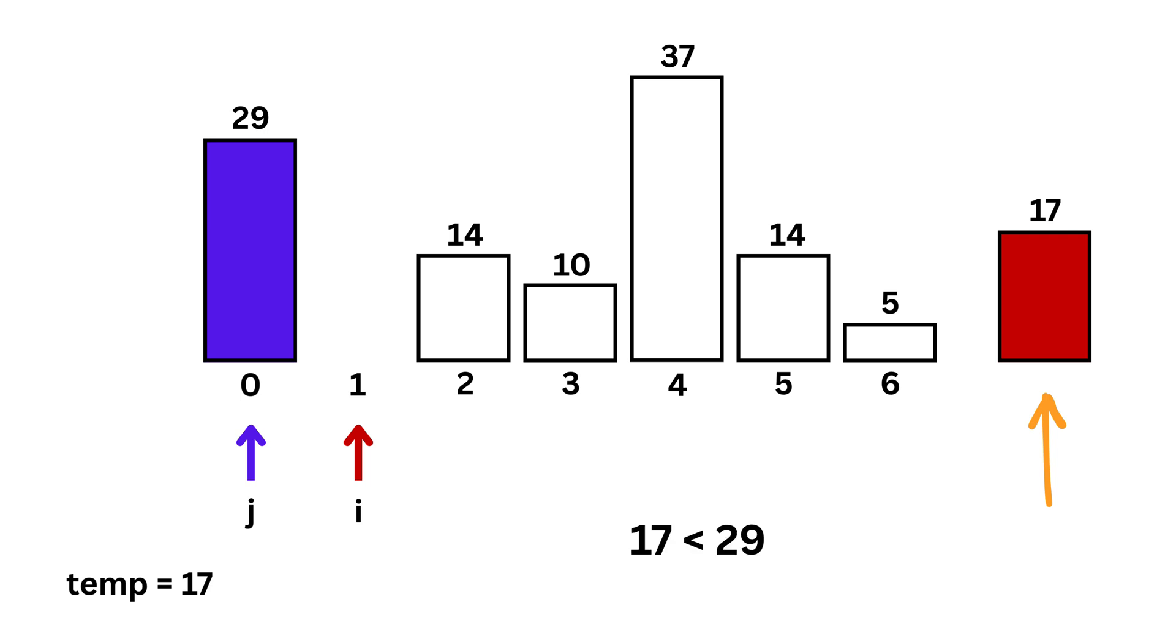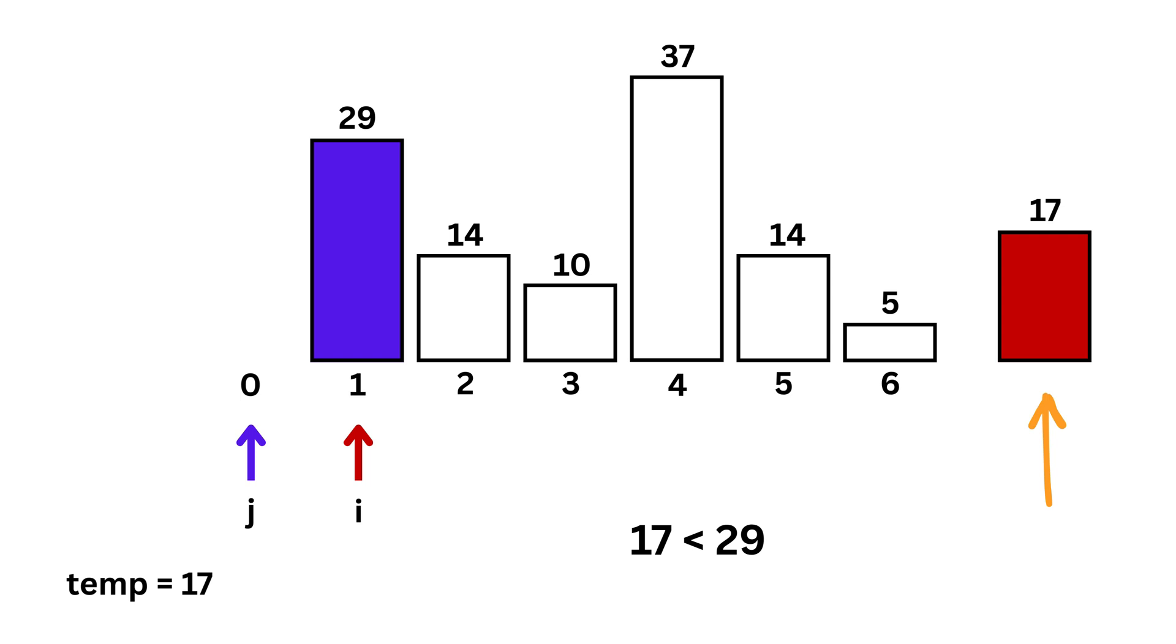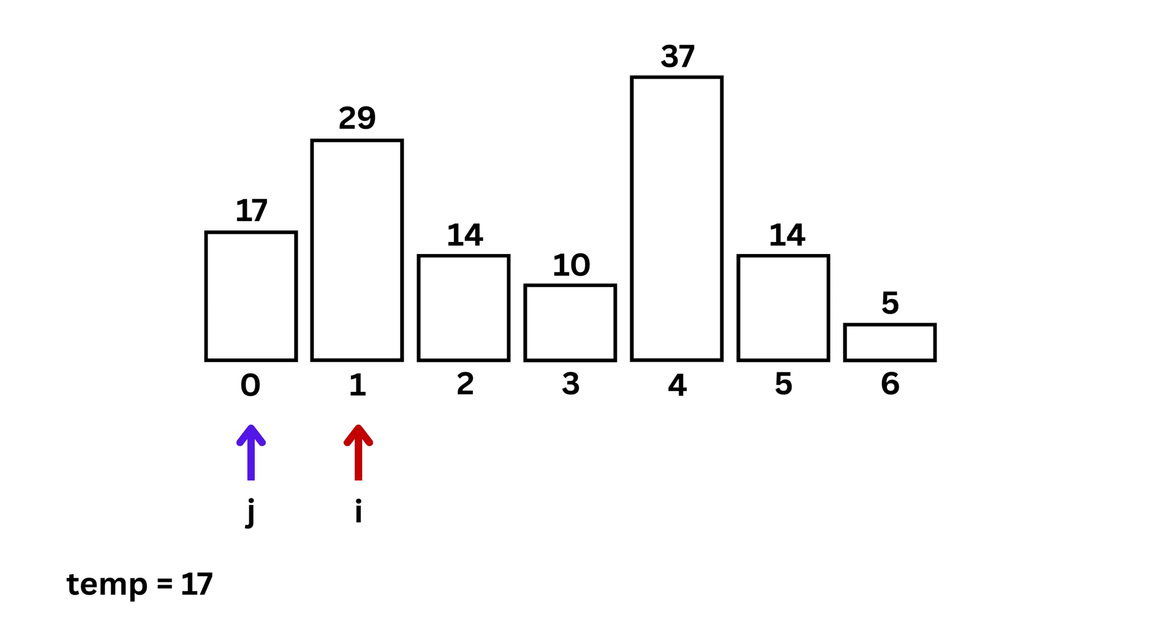Since 17 is smaller, we shift 29 one step to the right. Now, there's an empty space at index 0, so we place the value at temp there. Now, the list becomes like this.